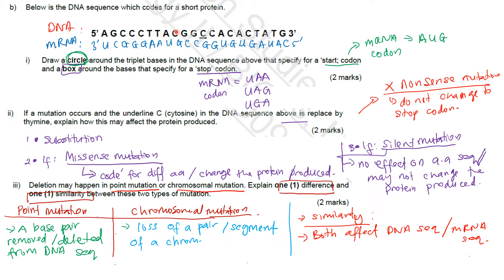For the second part of the question, the DNA sequence that will produce the stop codon must have a box drawn around it. Find one of the three stop codons in the mRNA sequence — here it is UGA. The corresponding DNA sequence is ACT. So, draw a box around ACT in the DNA sequence. First, write the complementary mRNA sequence based on the given DNA template.